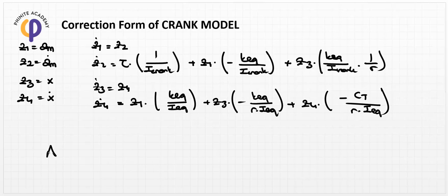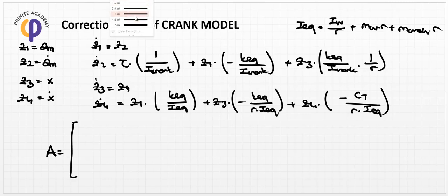The A matrix in the state space notation - the i_egg in here is equal to i_wheel times r plus m_crank times r.